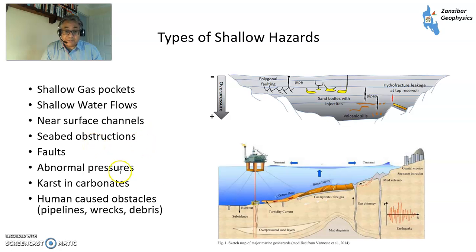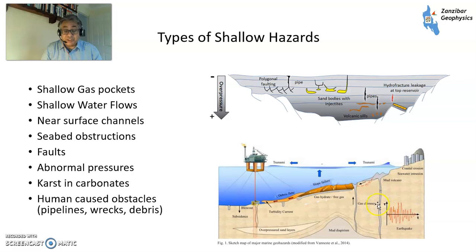Various seabed obstructions, both natural and man-made — for example, pipelines, wrecks, etc. Ditto with faults. Ditto with abnormal pressures because you can't cope with them at shallow levels — you can cope with them deeper down, but you don't have any facilities to cope with them at very shallow levels. Karst carbonates — very high porosity in carbonate rocks — will effectively take away your mud system because you'll have flow into the pores, which is uncontrollable.